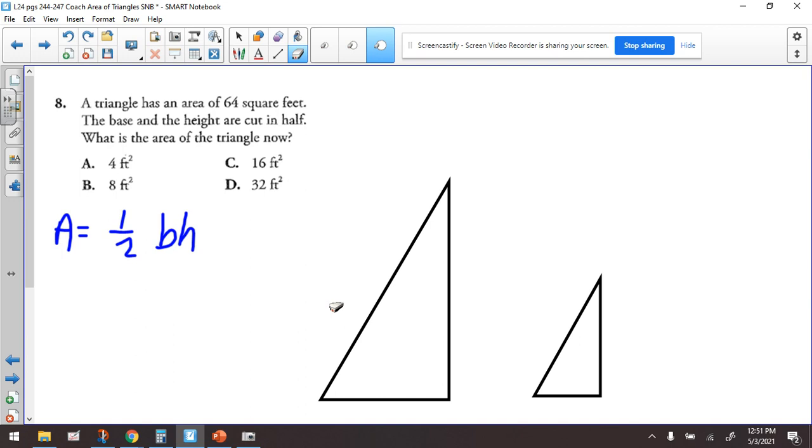Hey everybody, Ms. Dietrich here. We're taking a look at question number eight. A triangle has an area of 64 square feet. The base and the height are cut in half. What is the area of the triangle now?